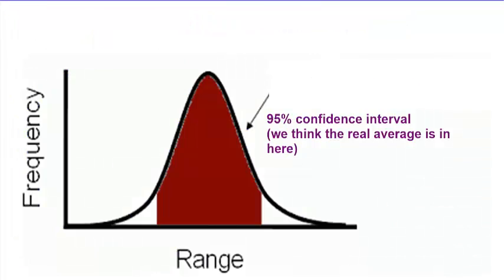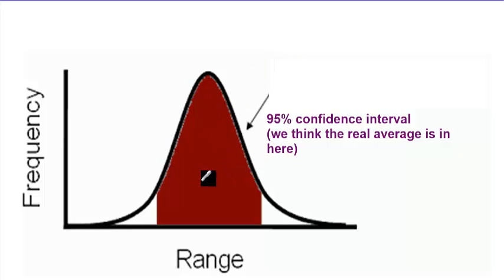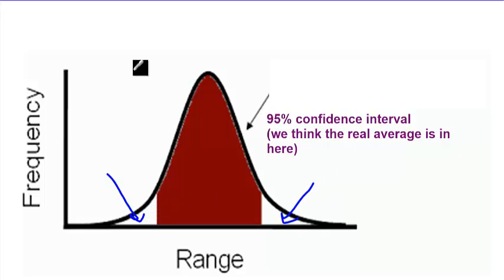So let's look at our normal model, the bell-shaped curve. In this area, the red-colored area, this is the 95% confidence interval. What we think the real average is should be in here — it should fall somewhere in this area. If it does not, then it falls out here at the tails, and that's the 5%, 2.5 on each side.